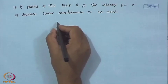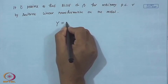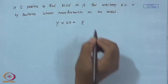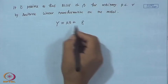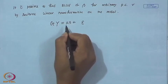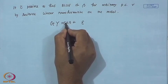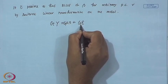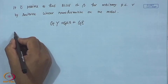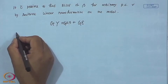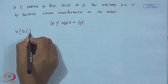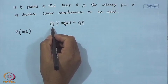We have the multiple linear regression model y = Xβ + ε, and we will take a linear transformation on this model — we multiply this model by G. Note that the variance of Gε equals σ²·GVG', because the variance of ε equals V·σ².